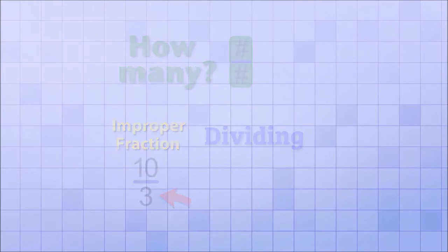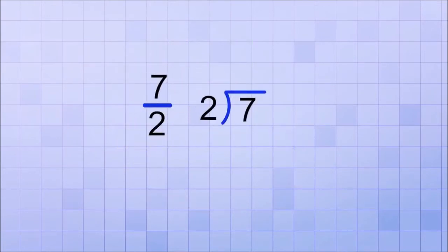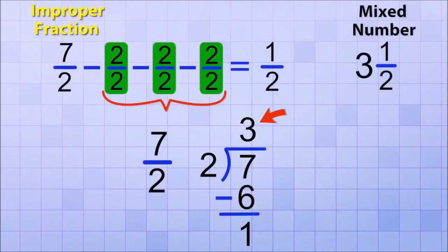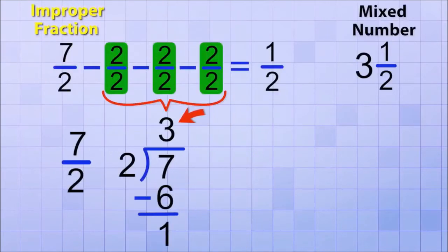Let's do that with our example 7 over 2. If we divide 7 by 2, we find out that 2 will divide into 7 3 times, leaving a remainder of 1. That remainder is actually important as we'll see in a minute. Notice that the answer to our division problem is exactly how many whole fractions we were able to subtract out of the improper fraction, 3. So the answer to the division tells us what the whole number part of the mixed number will be.